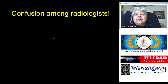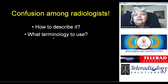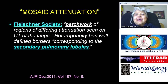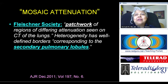There is confusion amongst the radiologists. They don't know how to describe it, what terminology to use, what follow-up to advise. As late as last December, the Fleischner Society — which is the Society of Chest Radiologists, Chest Surgeons, Pulmonologists, and Pulmonary Pathologists — got together and came up with a definition of mosaic attenuation. They defined it as a patchwork of regions of differing attenuation seen on CT of the lungs.